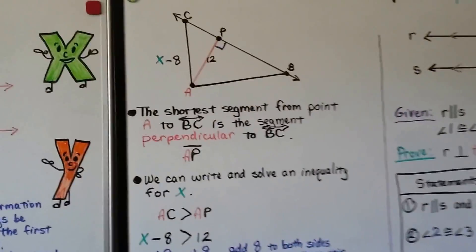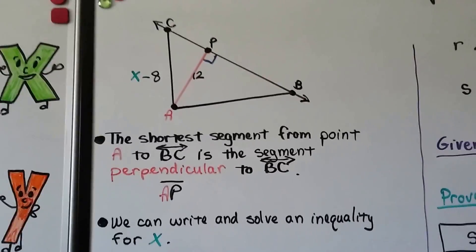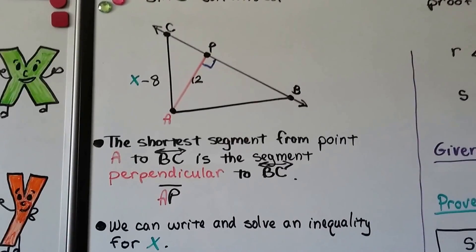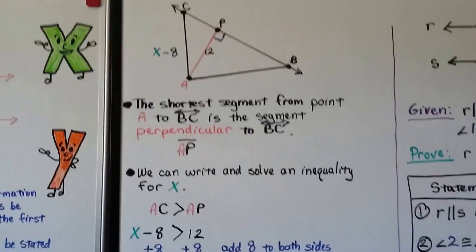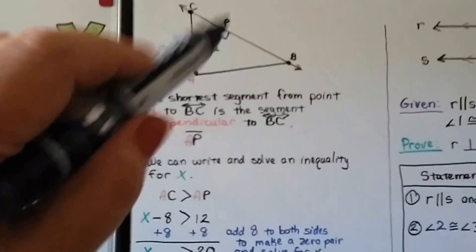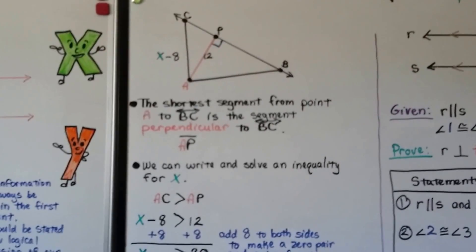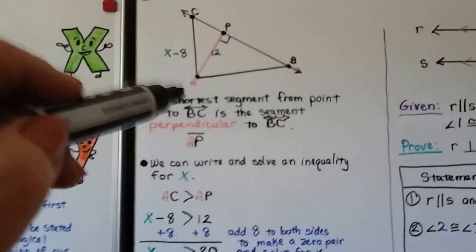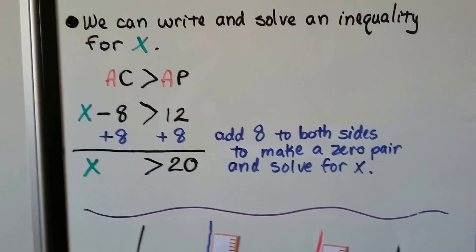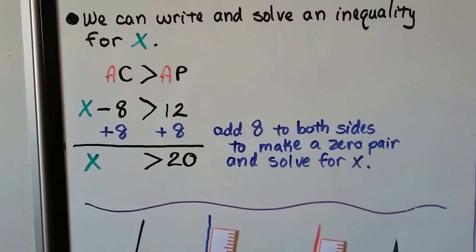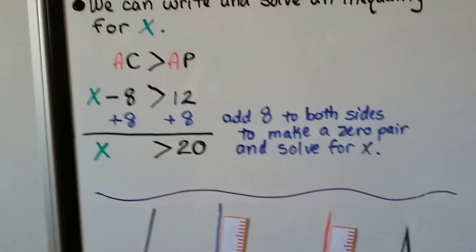Here's a little review of what we did in 3.4a. We've got a drawing with line BC and segment AP, and the shortest segment from point A to line BC is the segment perpendicular to BC — that would be AP. We can write and solve an inequality for x. AC is x minus 8 and AP is 12. Since AP is the perpendicular segment, it's shorter, so AC is greater than AP: x minus 8 is greater than 12. Adding 8 to both sides, we get x is greater than 20.